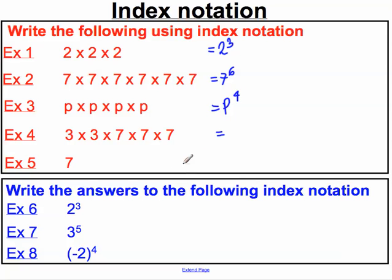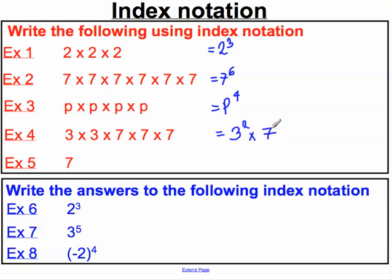In the next example, we've actually got two different bases: three on one hand and seven on the other. We need to keep our bases separate and only write index notation with one particular base at a time. The base three is multiplied by itself twice, giving three to the power of two. Separately, the base seven is multiplied by itself three times. So we would simply write this as three squared times seven to the power of three.